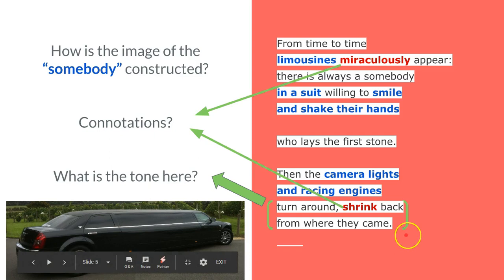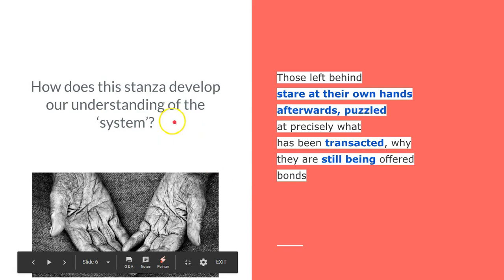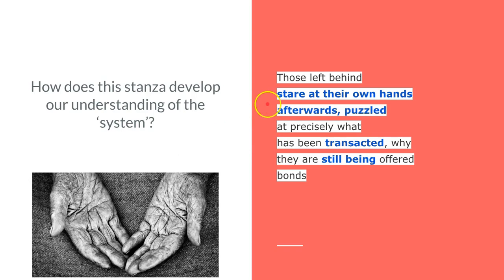And then the last few stanzas of the poem—the speaker is now dealing with the sense of abandonment and hopelessness. The question I posed here is how does this stanza develop our understanding of the system? The system has left them staring at their own hands, puzzled at precisely what has been transacted. Why are they still being offered bonds?